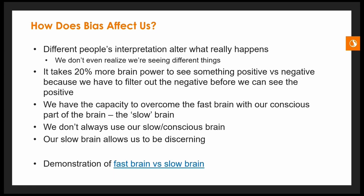That was another example of the tug of war between the fast brain and the slow brain. Your fast brain is working so fast it's harder — it takes longer to get the slow brain to engage. It seems like a very simple thing, just saying the name of those colors. But when the actual word in front of you was different than the color itself, your brain had a tug of war and it's very difficult.